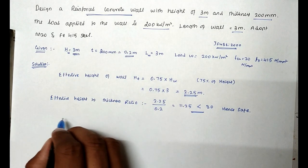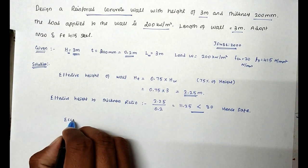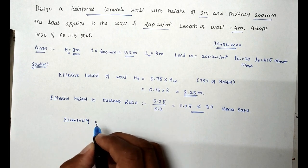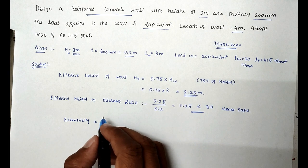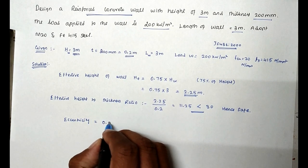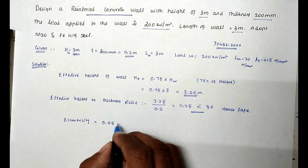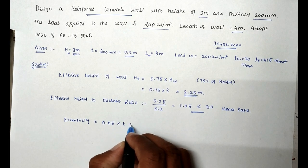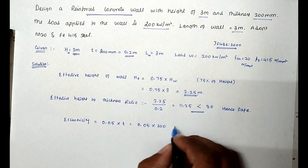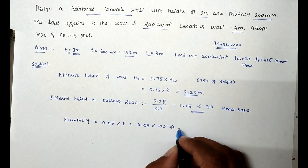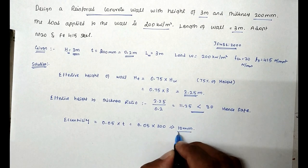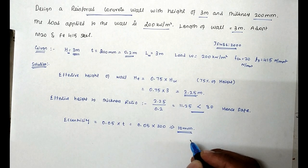Now checking the eccentricity: 0.05 × thickness = 0.05 × 200 = 10 mm. Hence the eccentricity is very minimum, so we can treat this as an axially loaded wall.